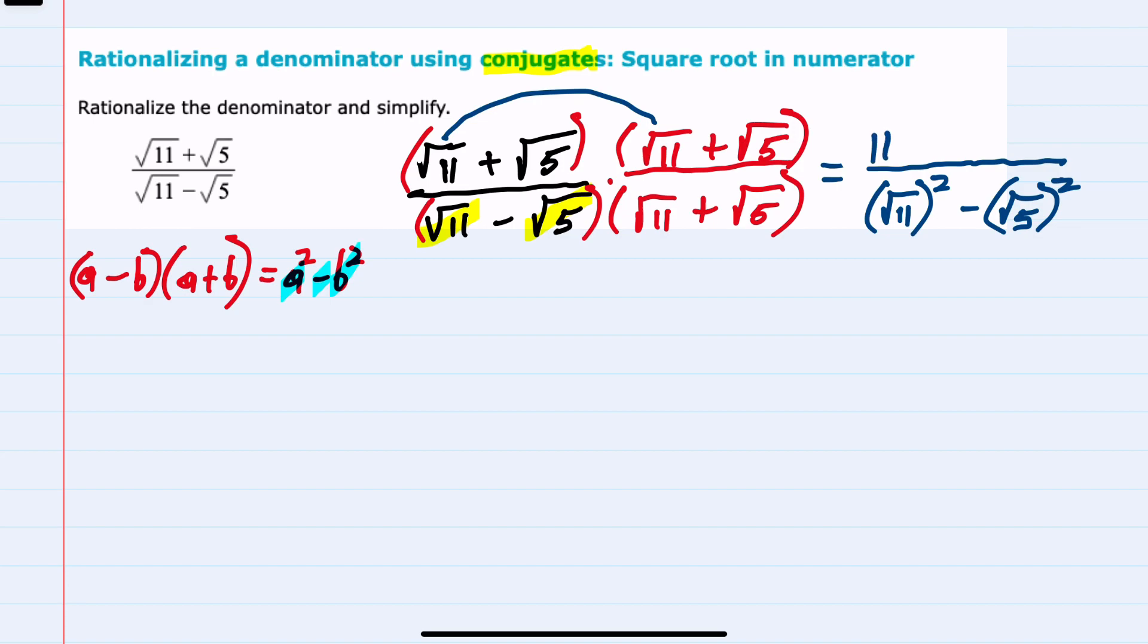And then I would need to multiply by that last term. So the square root of 11 times the square root of 5, they're both positive. We keep the square root, multiplying 11 and 5, we have 55.